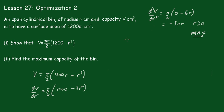So we'll let dV/dr equal 0. We get π upon 2 into 1200 minus 3r squared equals 0. That means that 3r squared must be equal to 1200. So r squared must be equal to 400, which means that r must be equal to square root of 400, which is 20.